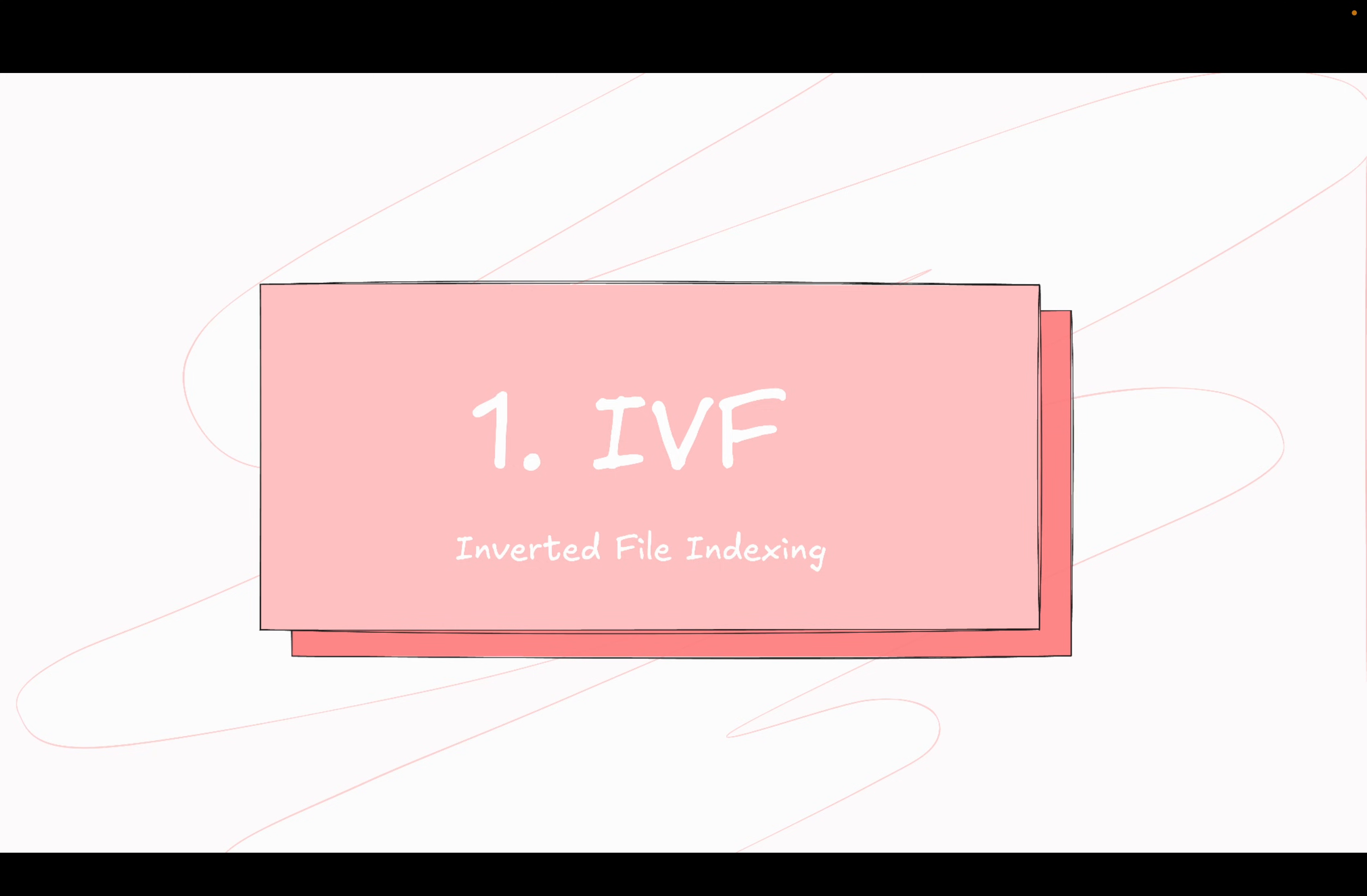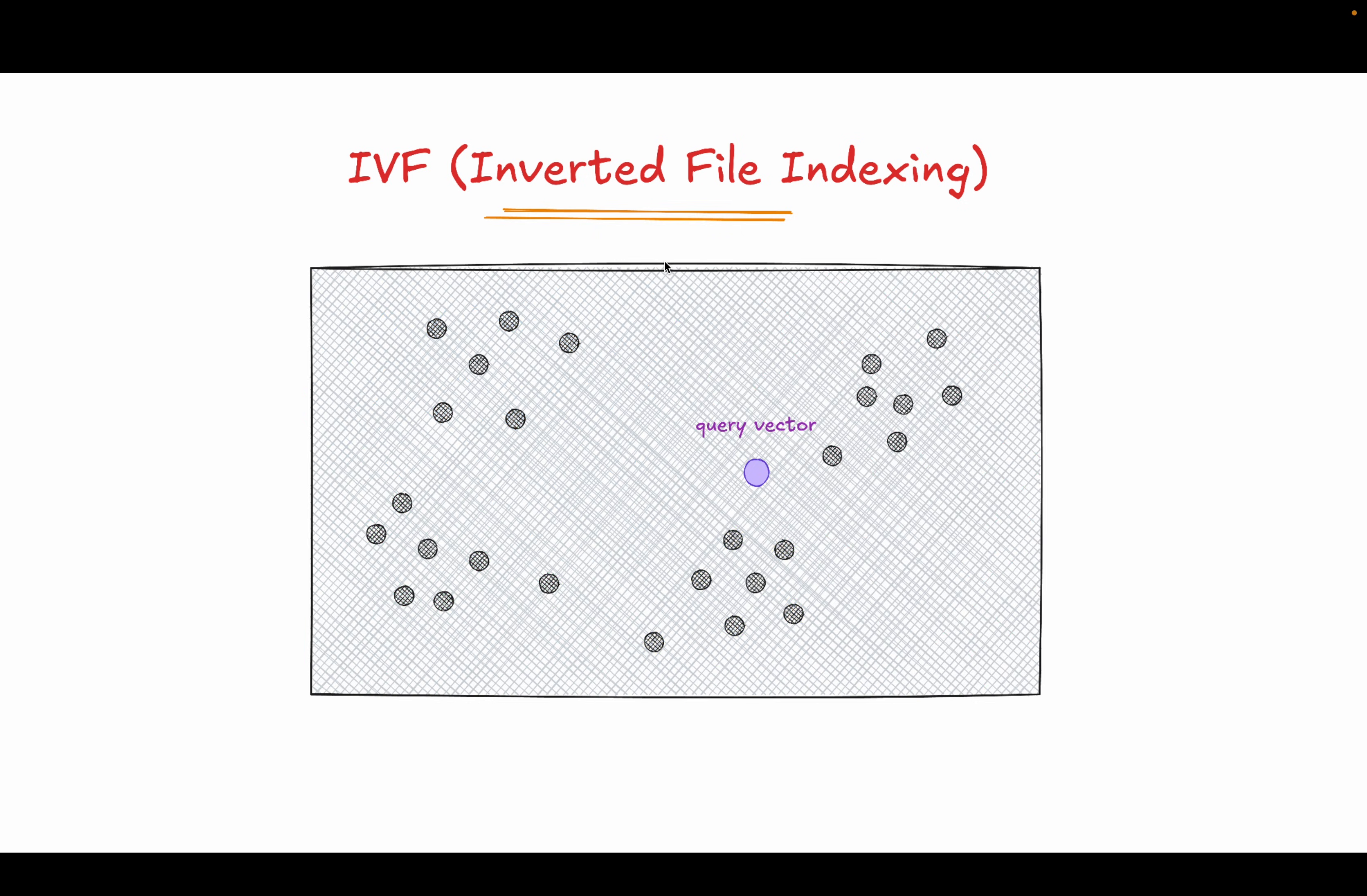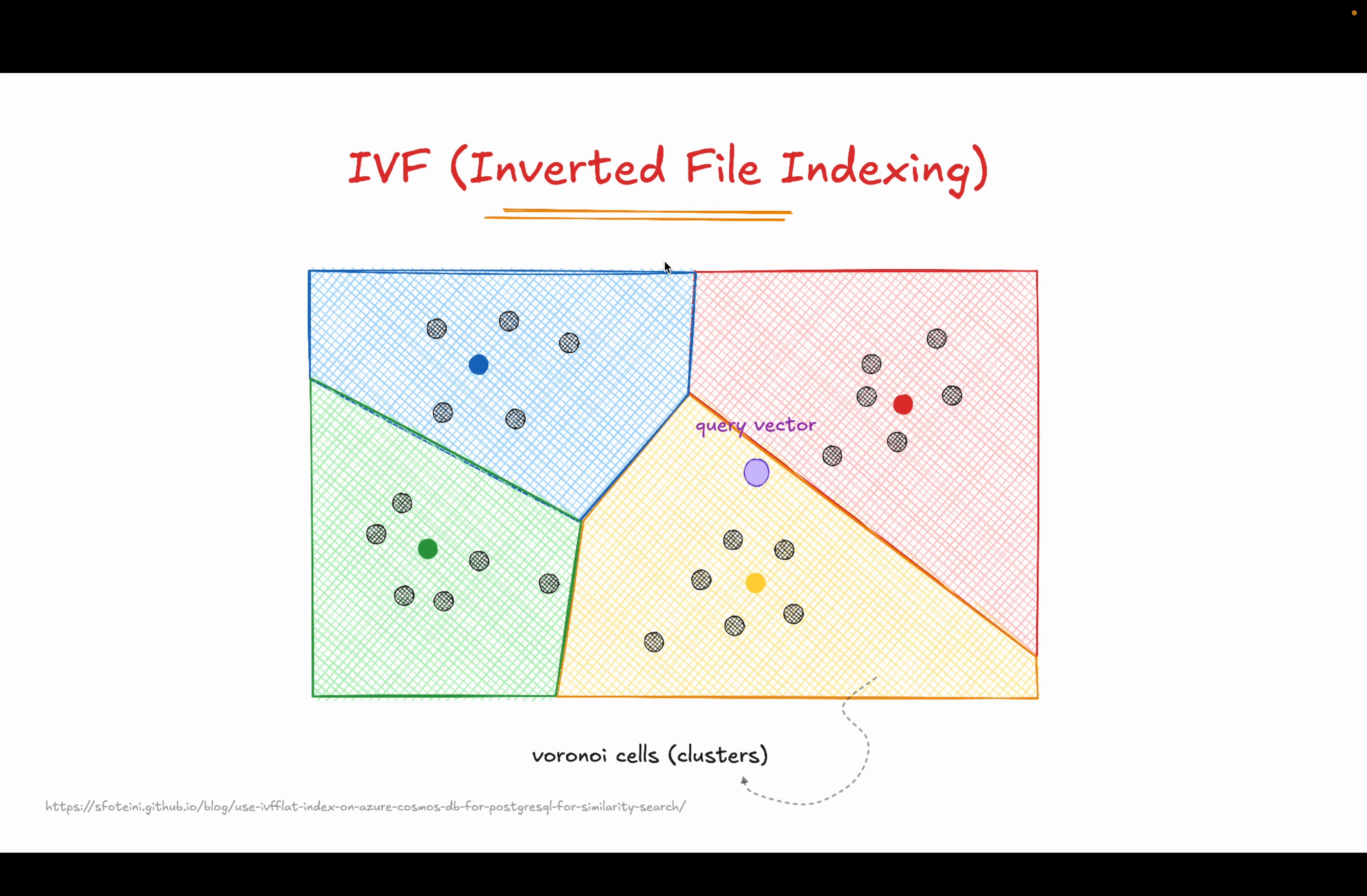Let's start with the first method: IVF or inverted file indexing. What IVF does is pretty straightforward. It just divides this entire space—the entire space that we had—it just divides that into clusters. And each of this cluster has a centroid. If you can see these blue, green, yellow and red points, they are all centroids of these clusters.